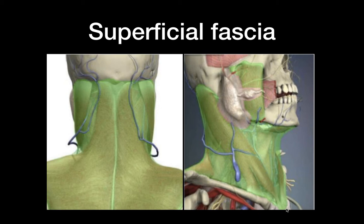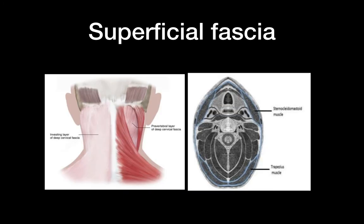Looking at the inferior border, this fascia passes through the manubrium, sternum, clavicle, acromion, and spine of the scapula. This fascia also surrounds the craniothoracic muscles — the trapezius and the sternocleidomastoid. The blue area here is the superficial fascia, and you can see that it covers the sternocleidomastoid and the trapezius muscle.